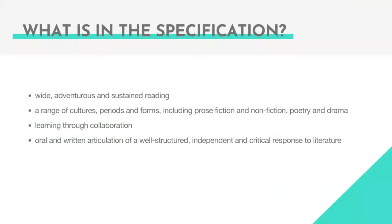In terms of what's in the specification, the next couple of slides are taken word for word from the specification, just to refresh the purpose behind the reading certificate. So that pupils are exposed to wide, adventurous and sustained reading. The word 'sustained' really spoke to me — as an English teacher I'm sure I'm not alone in seeing a bit of a drop-off as children go into year seven. Sustaining that enjoyment and excitement about reading through years seven and eight, when they've got so many other things heaped on them, is going to be a really important element of the reading certificate. The range of cultures, periods and forms — thinking about prose fiction, but not neglecting other important forms: non-fiction, poetry and drama.